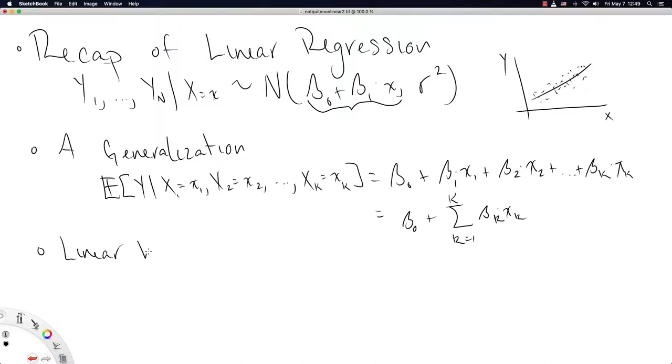So that begs the question of linear how. And linear regression literally means linear in the coefficients, beta k. Linear regression literally means linear in the coefficients betas. The betas themselves need to be linear. And notice that's exactly what's happening here in this generalization of linear regression. We are adding up beta times some values. But these values, the xk, really can be whatever they want.